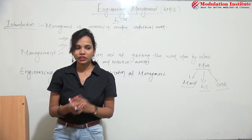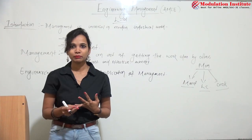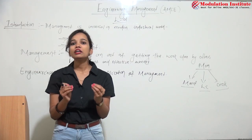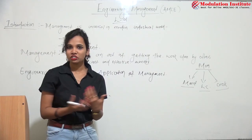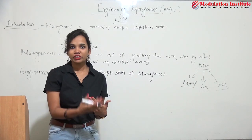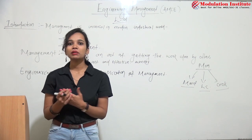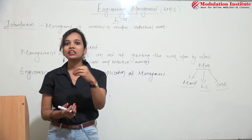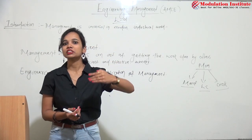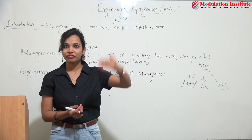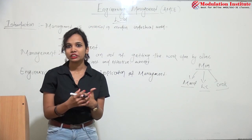What does engineering mean? There are several branches such as mechanical, electrical, and civil, and every branch has its own work. In civil, we do construction; in mechanical, we work on machinery; and in electrical, we work on supply. When we apply management properly in each of these areas and take results, we call it engineering management.